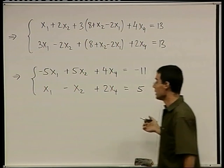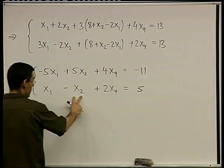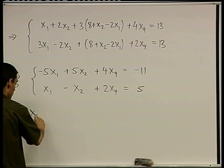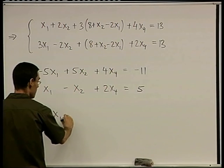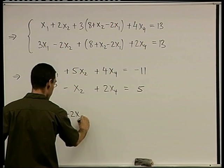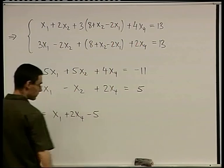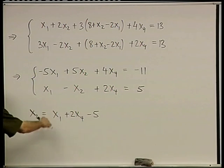Now the other equation. So I have 3x1 minus 2x1 is x1, minus 2x2 plus x2 is minus x2, plus 2x4 equals 13 minus 8, which is 5. Good. I'm going to do it again. I'm going to choose one of these. I'm going to take the second one and isolate x2. So from the second one, I have x2 equals x1 plus 2x4 minus 5.